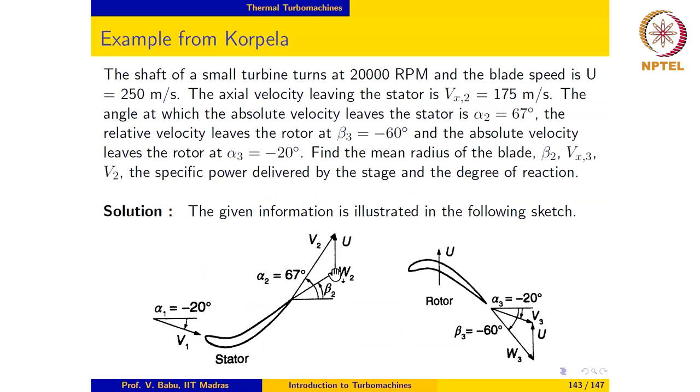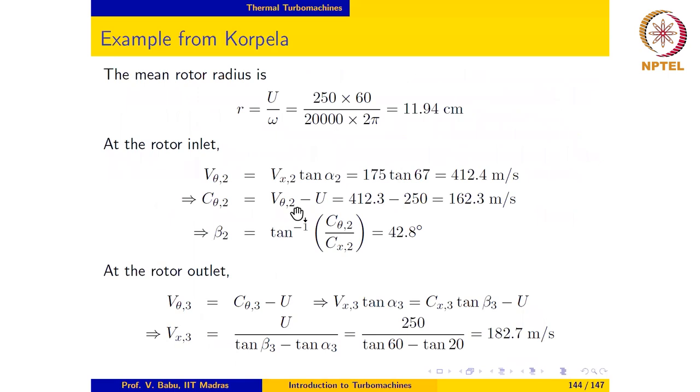At the rotor inlet, v-theta-2 is nothing but vx2 times tan alpha2. So v-theta-2 may be calculated as 412.4 meters per second. So v-theta-2, which is this segment here, is nothing but vx2 times tan alpha2.